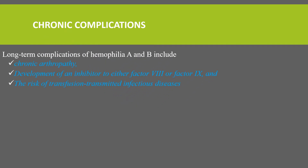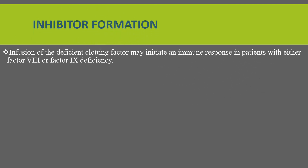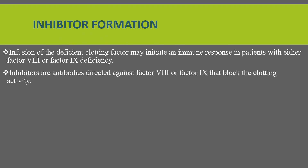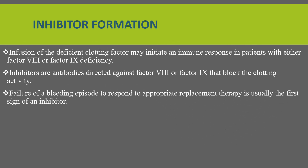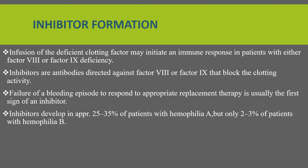The long-term complications of hemophilia include chronic arthropathy, development of inhibitors to either factor 8 or factor 9, and the risk of transfusion-transmitted disease. Inhibitors are antibodies directed against factor 8 or factor 9 that block clotting activity. The failure of a bleeding episode to respond to appropriate replacement therapy is usually the first sign of an inhibitor. Inhibitors develop in approximately 25 to 35 percent of patients with hemophilia A and only 1 to 3 percent of hemophilia B, so inhibitor development is more common in hemophilia A.